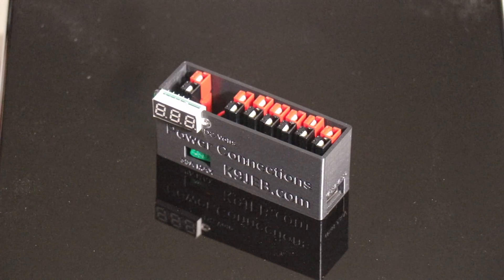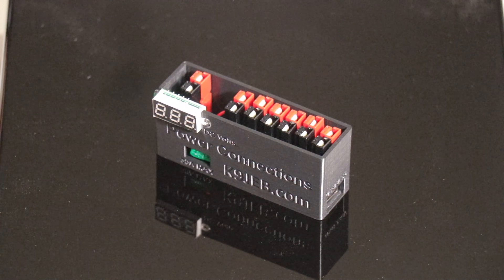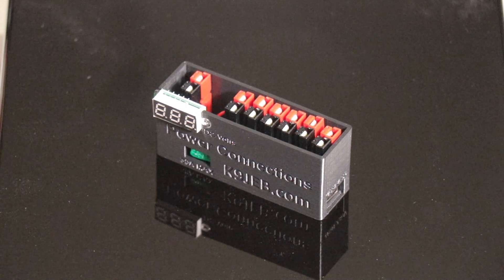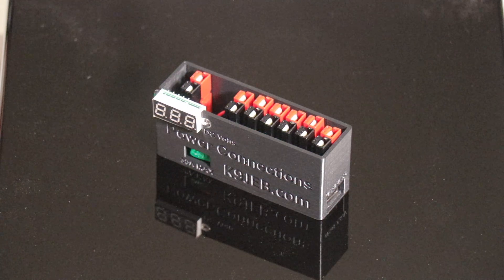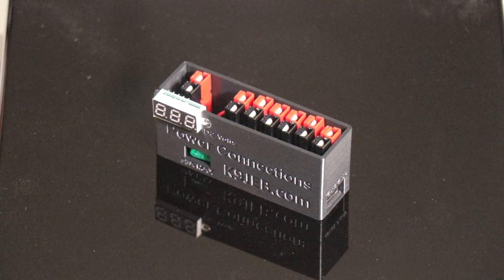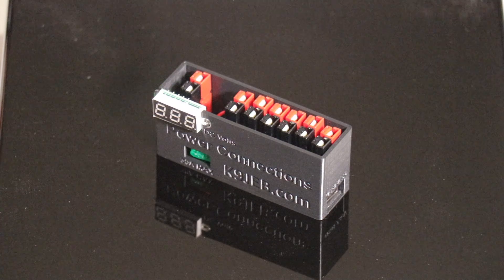The PC-6 has one power pole inlet and six power pole outlets, as well as a USB outlet and a 30 amp fuse. This one also comes with a meter. K9JEB.com has several different power pole distribution blocks that you can build.